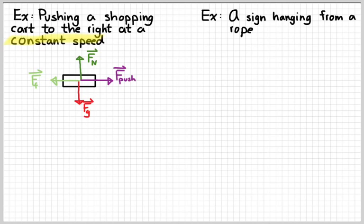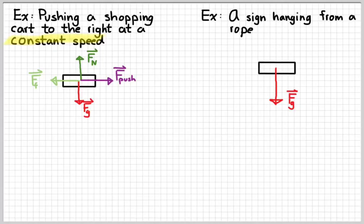Suppose you have a sign hanging from a rope. Signs obviously have weight. So what is holding this thing up? A rope holding it up — so that would be a tension force. The forces are balanced because the sign is just hanging there, so you draw them to the same length.